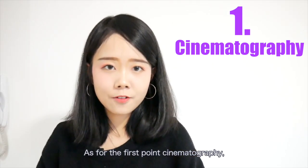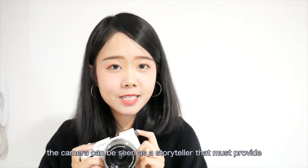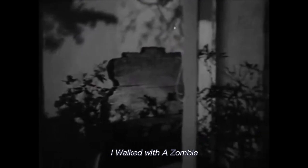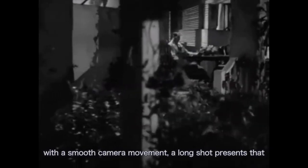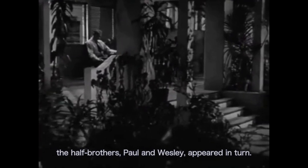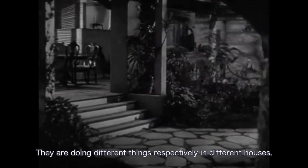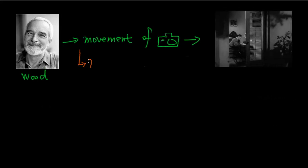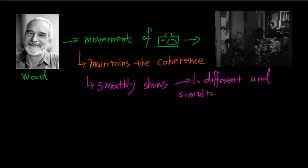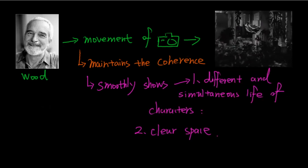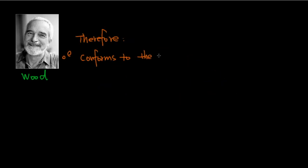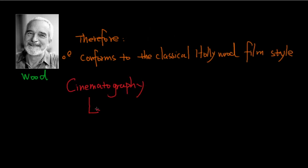As for the first point, cinematography, the camera can be seen as the storyteller that must provide the necessary information to the spectators. For instance, in 'I Walked with a Zombie,' with smooth camera movement, a long shot presents the half-brothers Paul and Wesley appearing in turn. They are doing different things respectively in different houses. Film scholar Bordwell suggests that the movement of camera images maintains coherence, which smoothly points out the different and simultaneous lives of characters and clarifies space to the spectators through the combination of this long shot and the camera movement. Therefore, it conforms to the classical Hollywood film style that cinematography needs to present easy-to-understand views for the spectators around the storytelling.